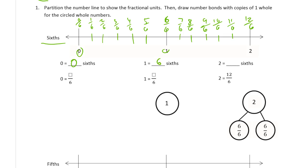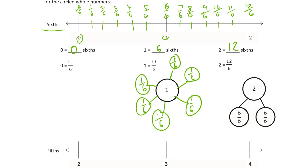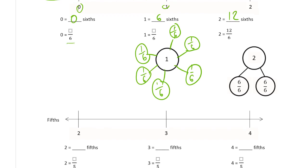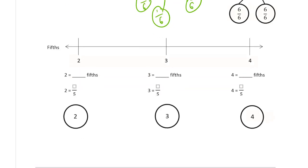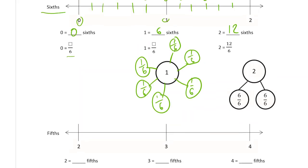And this is two wholes is the same as 12 sixths. And so I need 1, 2, 3, 4, 5, 6 of these. So that's 6 sixths. And for 0 sixths, there's no number bond to draw because it's nothing. How do you draw a picture of nothing? I just did.